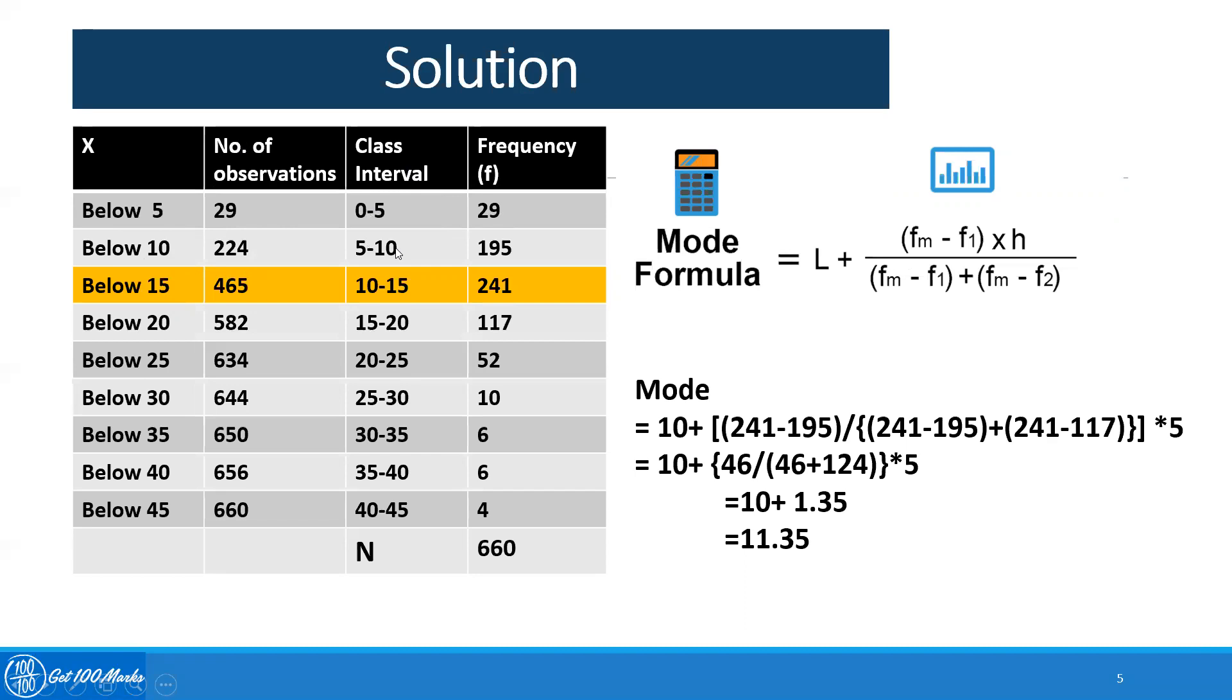Then 5 to 10. Below 10 means I am just taking 5 to 10. So in the range of 5 to 10, my cases will be 224 minus 29, which is 195. Similarly, below 15 is 465, which is actually including 224 and 29. So therefore, for 10 to 15 in this particular class interval, it will be 465 minus 224. You can see the actual frequency will be 241.